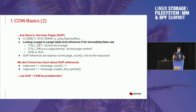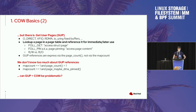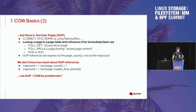Then we have FOLL_PIN, which essentially means I want to take a reference on the page and I really want to access page content. We usually use that only in context of user references, for example when we have to deal with VFIO, RDMA, io_uring fixed buffers, and things like that. We can have read-write references or read-only references. In general, when we talk about Get User Page references, they are counted via the page count and not via the map count, because the map count only tells us how many processes are actually mapping this page.